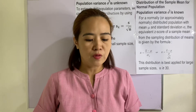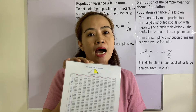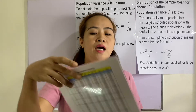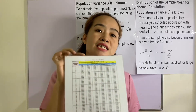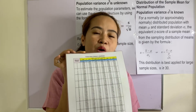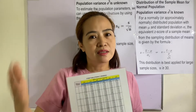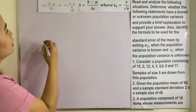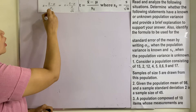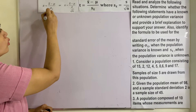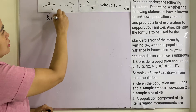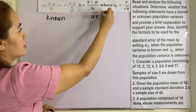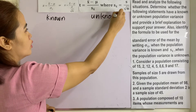What is the z-distribution and t-distribution that I am talking about? This one is, of course, a z-distribution — you can download it. And this one is, of course, a t-distribution. We will be using them in the succeeding lessons. So we know that this formula is for when population variance is known, and this one is for when the population variance is unknown.